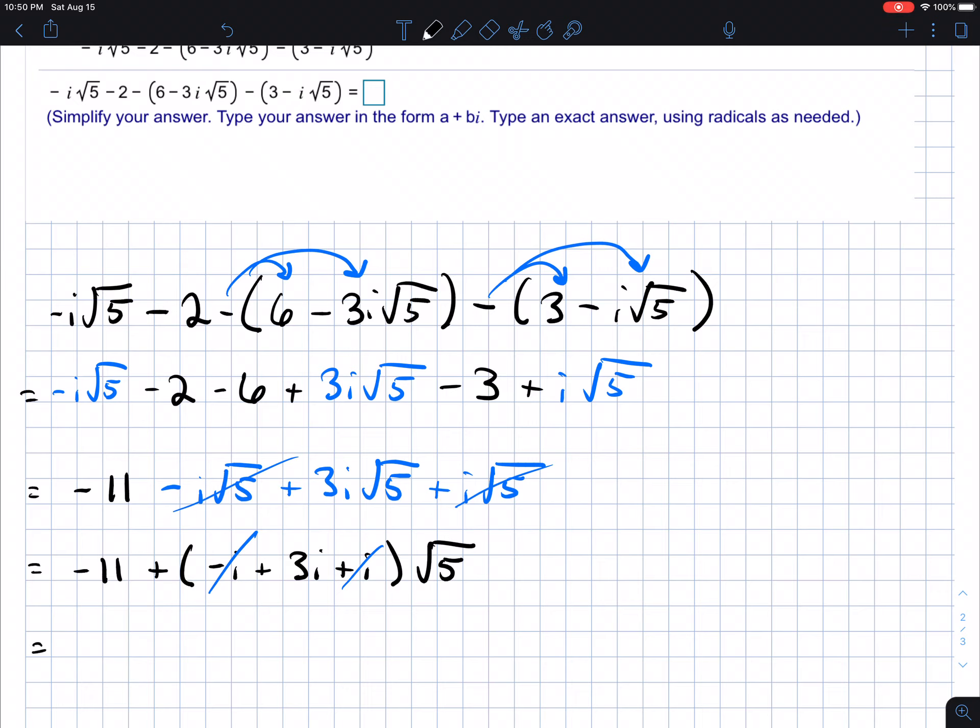So then we'll finish with negative eleven plus three I times the square root of five. Okay. I'm not going to check this. It should be okay. I'm going to leave it.